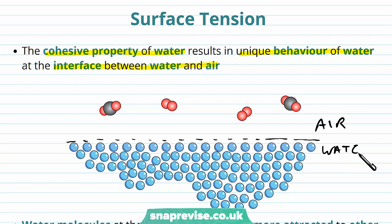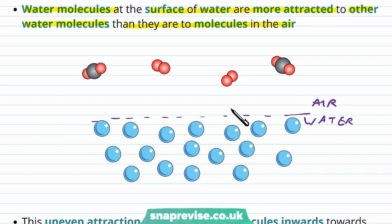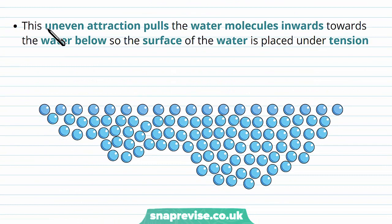The water molecules at the surface are more attracted to other water molecules around them than they are to any of the molecules in the air. The intermolecular forces between the top water molecules and the air molecules are quite weak, but the forces between the surface water molecules and the water molecules around and underneath them are much, much stronger. Because of this uneven distribution of attraction, it's trying to pull the water molecules inwards back into the body of water, so the surface of the water is placed under quite a lot of tension.